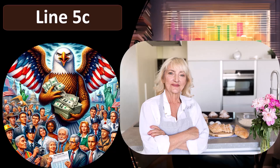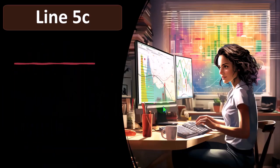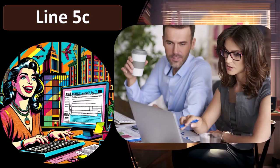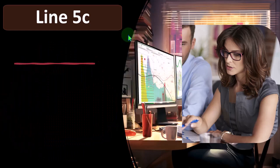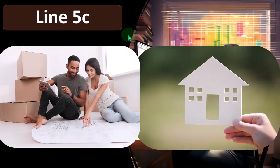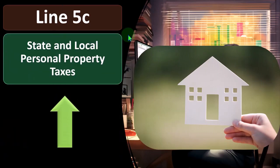We talked about the ways that the state can tax in a prior presentation, which could include a state income tax similar to the federal system, or possibly a sales tax system. We also talked about taxes on property — in this case, real estate property, typically someone's home — and the deductibility of that. Now we're taking a look at other property taxes, which probably isn't the big one. The big ones are the state's primary tax tools: a sales tax system and/or an income tax system, plus the property tax for homeowners. This category is not the big one, but still something to keep in mind — state and local personal property taxes.